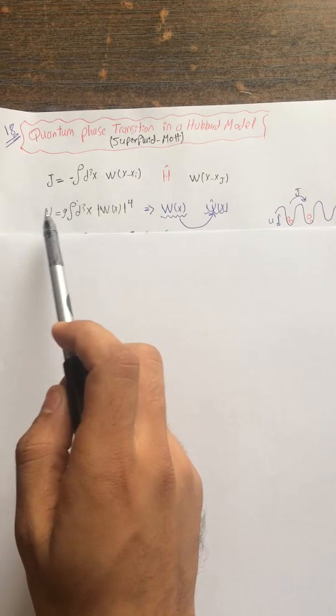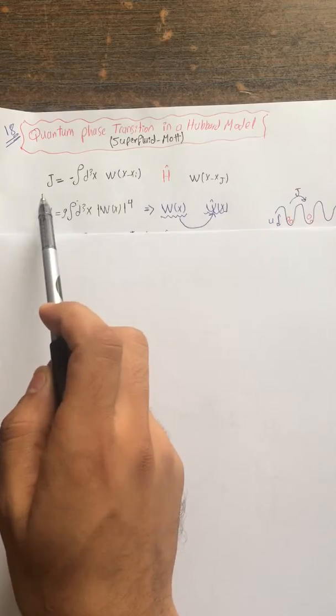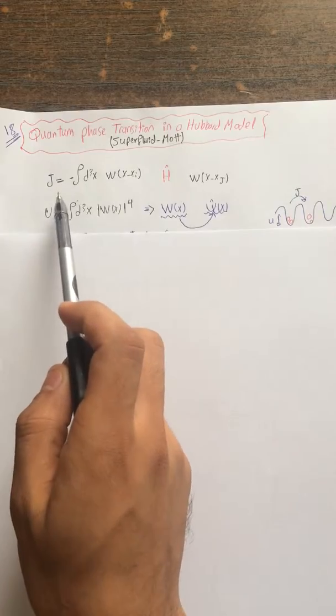Welcome back to the 18th video of this course on quantum processing. Last time we talked about the matrix elements that govern our dynamics in an optical lattice for the band structure of Bloch waves — for the ground state of our Wannier basis in terms of Bloch waves. Let me remind you that those matrix elements are J for tunneling and U for the on-site interaction.